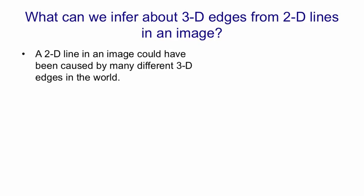So a 2D line in an image could have been caused by many different three-dimensional edges in the world. If this blue dot is your eyeball and the red lines are two lines of sight coming from the centre of your eyeball, then the black line is a possible 3D edge that would lead to a two-dimensional line on your retina. Here's another 3D edge that would lead to exactly the same thing on your retina. And here's another one, and here's another one. All of these different 3D edges have exactly the same appearance in the image.